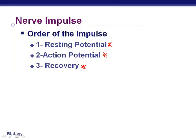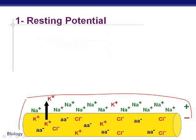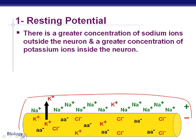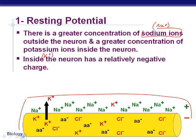Please draw this diagram because it shows what's happening at each step. First, there's a greater concentration of sodium ions outside the neuron — the yellow part represents the neuron itself. Inside the neuron, there's a greater concentration of potassium (K+), while outside there's lots of sodium (Na+). Because of this, the inside is relatively negatively charged, with lots of negatives like chlorine and amino acids and only a few positives.